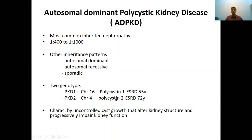Depending on the type of gene affected, the phenotype or the way these patients clinically progress differs. If you have a PKD1 gene abnormality, these patients develop end-stage kidney disease much earlier, by about their 50s, as opposed to the PKD2 type, where they have a very protracted, slow progression and will not develop end-stage until very late, in their 70s and 80s.